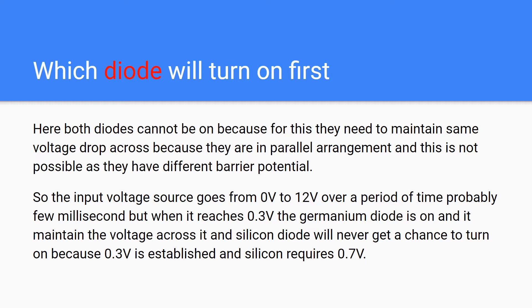The voltage supply goes from 0 volt to 12 volt and settles at 12 volt. In that duration, whenever the voltage reaches 0.3 volt, the germanium diode turns on and maintains that voltage. Across both diodes, 0.3 volt gets established by the germanium diode, and the silicon diode will never turn on. So only the germanium diode turns on.